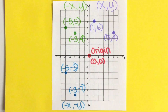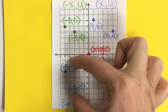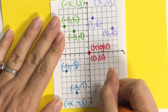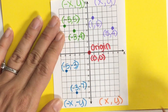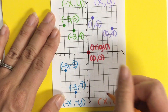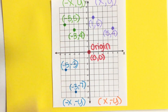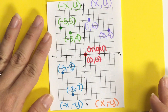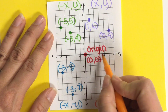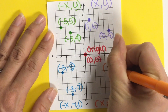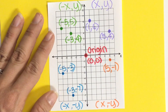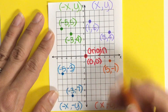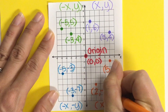Last, we have quadrant four. In quadrant four, the x is positive and the y is negative — the only negative here is the y, which is actually opposite of quadrant two. Let's plot (5, -1): go over five on x, down one on y. Then plot (2, -5): positive two on x, down to negative five. Both points (5, -1) and (2, -5) are in quadrant four. This was an introduction to ordered pairs with four quadrants.